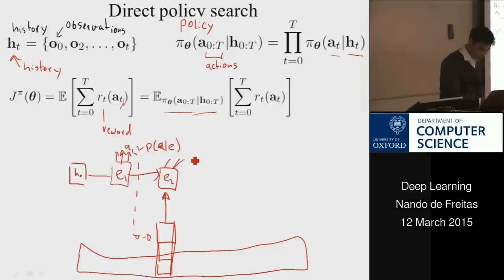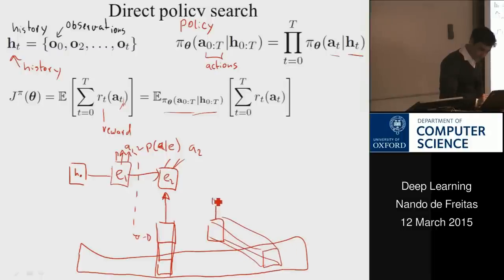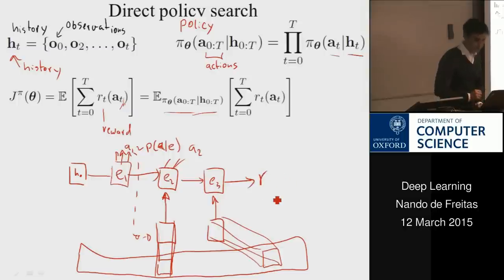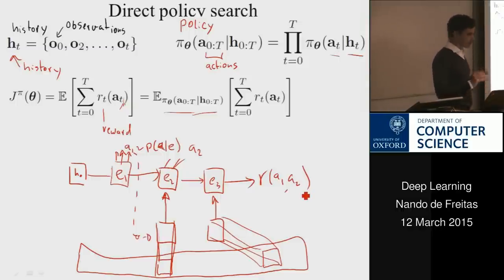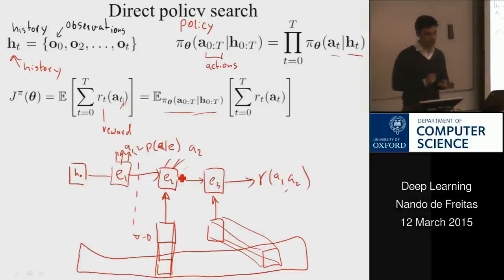That bit of information produces embedding E3, and from E3 you may get a reward signal — which could be the sum of all rewards for all actions, or just the reward over the sequence A1, A2. Rewards can come only at the end or at each step — many variations exist, and the right formulation depends on the problem.